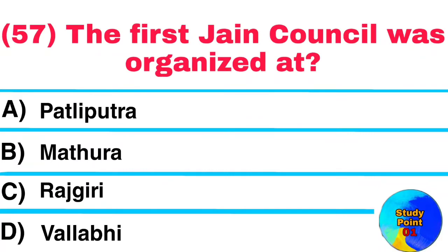Question No. 57. The first General Council was organized at? Answer: Patliputra.